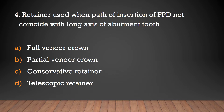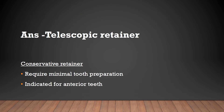Which retainer is used when the path of insertion of FPD does not coincide with the long axis of the abutment tooth? Full veneer crown, partial veneer crown, conservative retainer, or telescopic retainer? The answer is telescopic retainer. Conservative retainers require minimal tooth preparation and are indicated for ideal teeth.